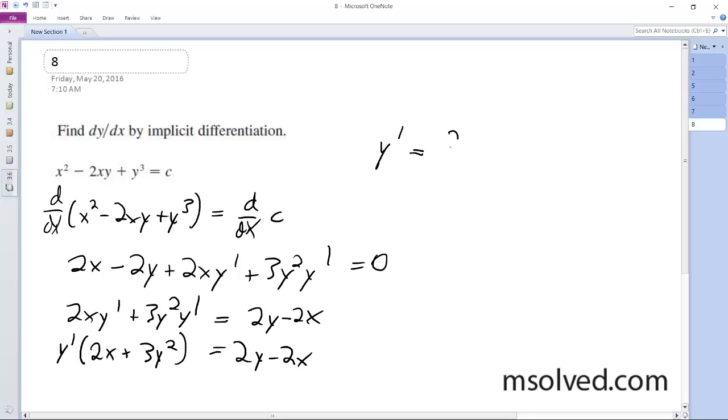y prime is equal to 2y minus 2x divided by 2x plus 3y squared. There you have it.